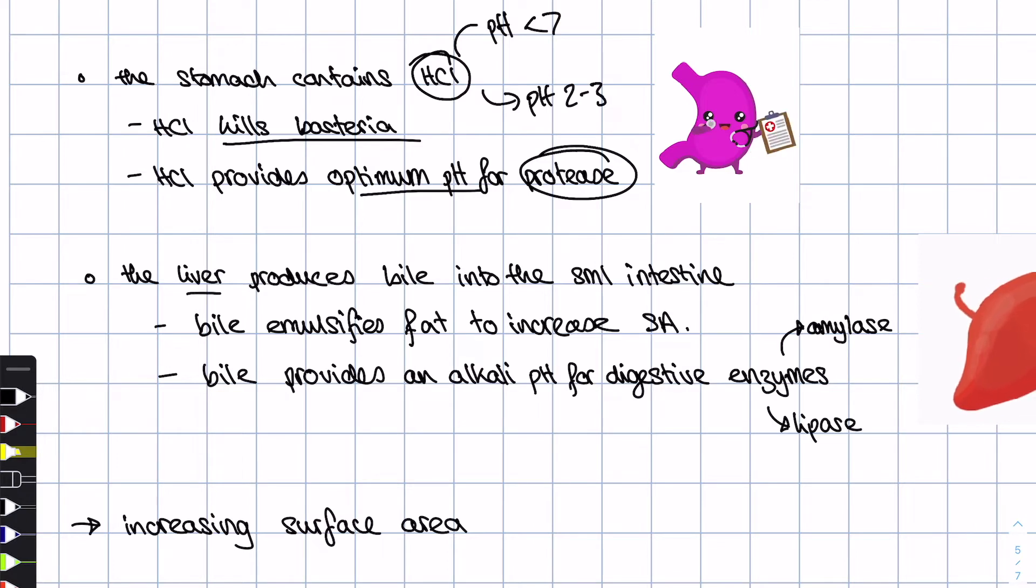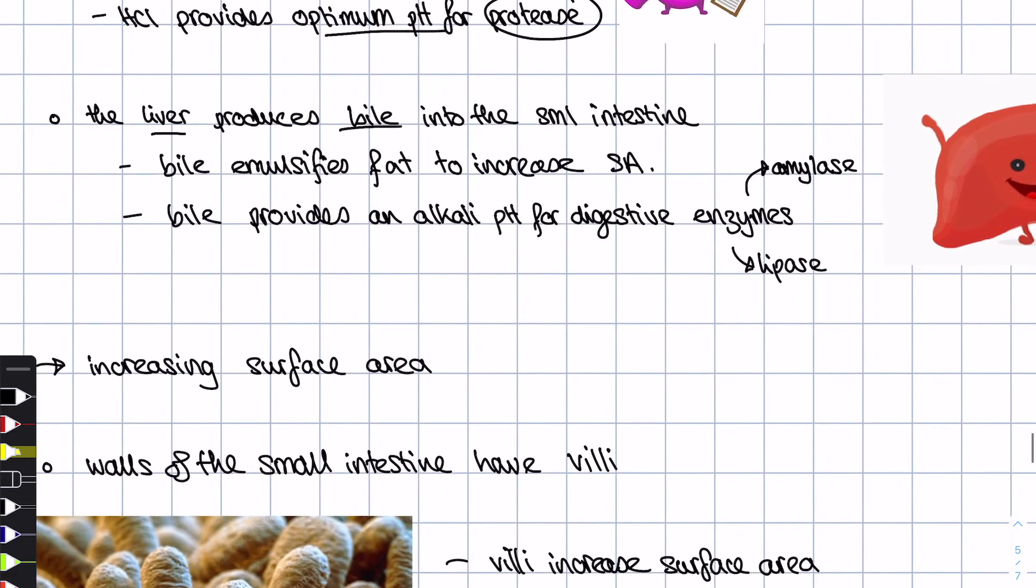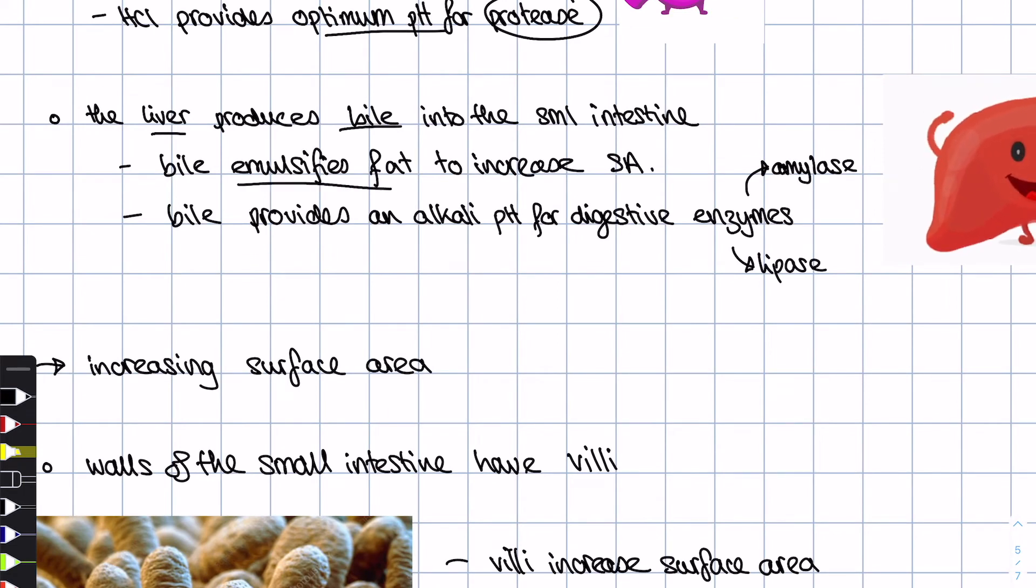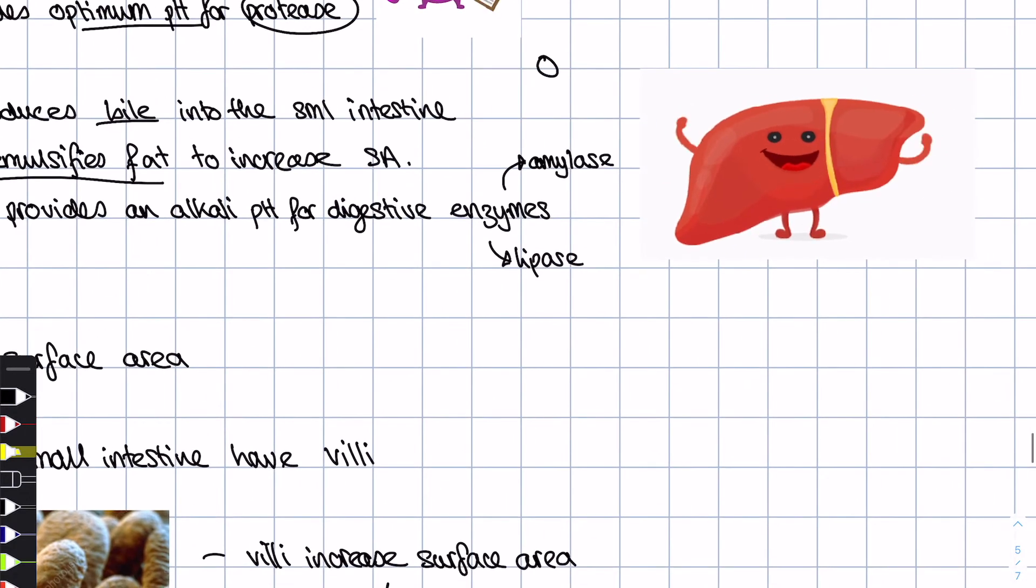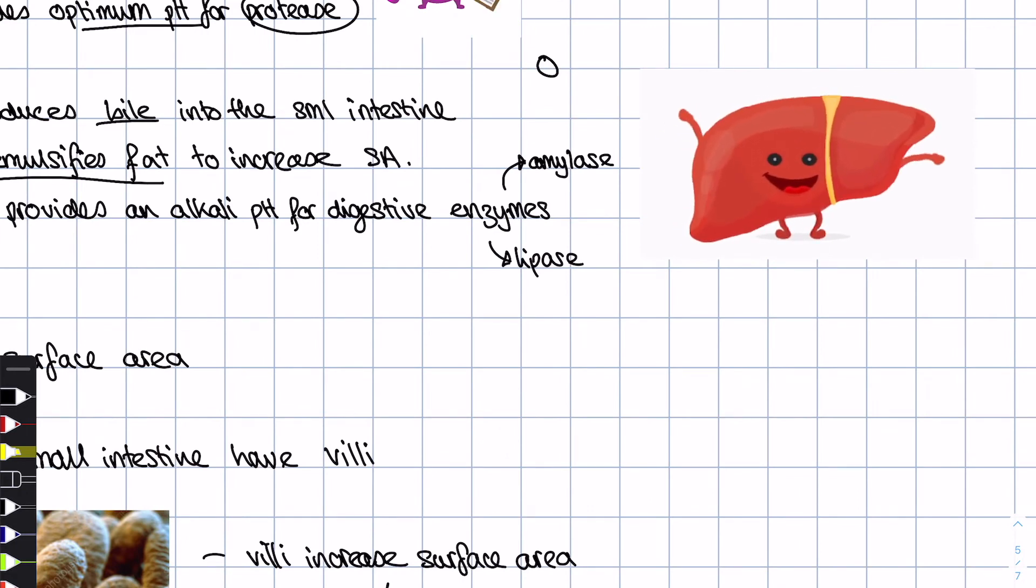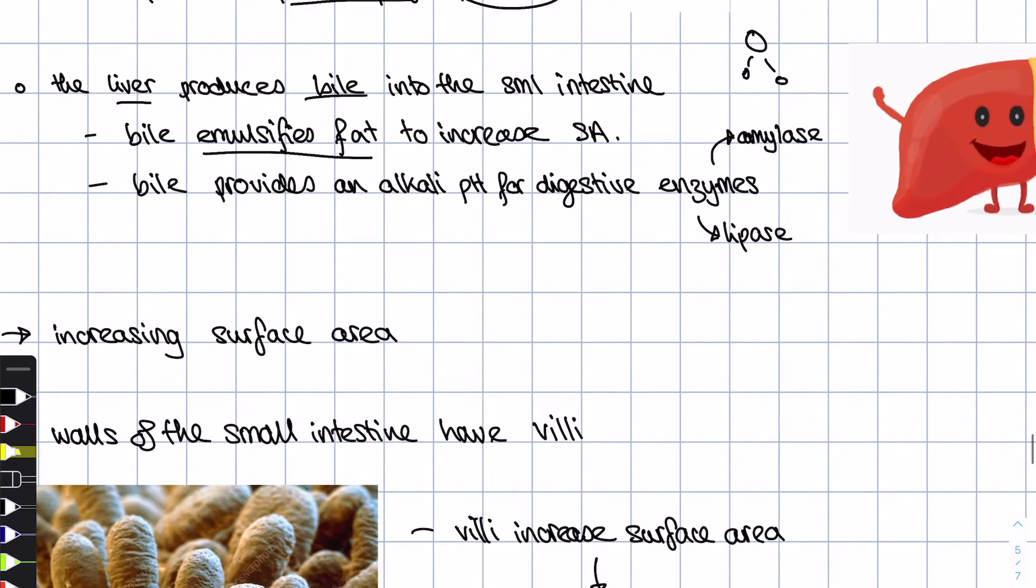Secondly, the liver produces this green substance called bile, which is stored in the gallbladder and then secreted into the small intestine. Now, the bile has two functions. The first thing it does is it emulsifies fat. That's a phrase you need to be quite familiar with. Essentially, fat are these big insoluble droplets, which means they don't dissolve very well in water, and that means that they're very hard to break down and digest. What bile does is it breaks this fat globule down into smaller droplets, and that increases its surface area to volume ratio, which means it's a lot easier to break down those fats, lipids, into fatty acids and glycerol.